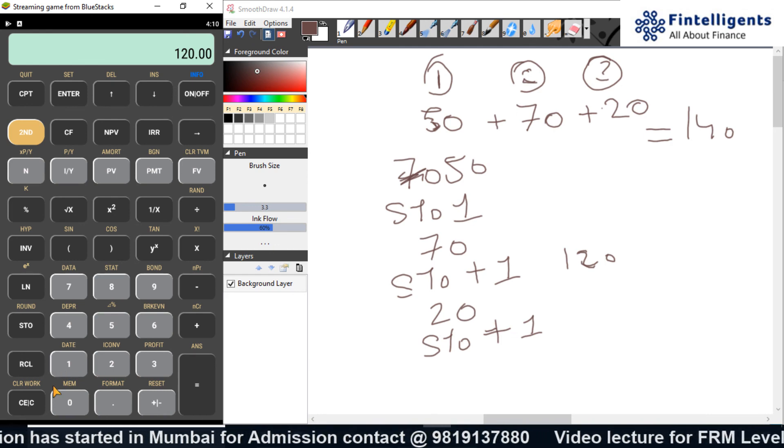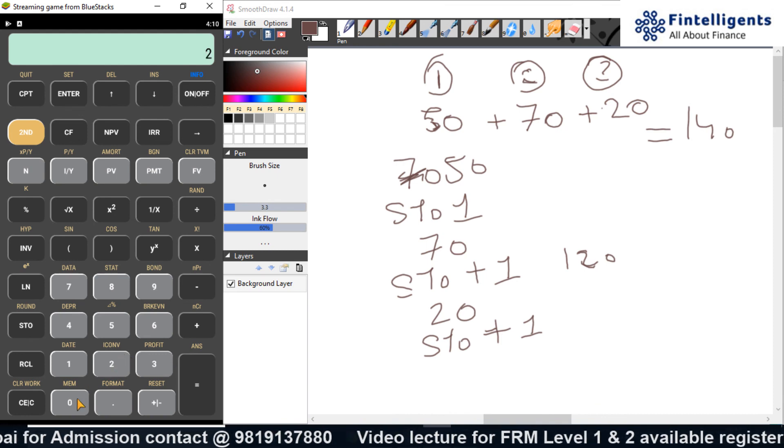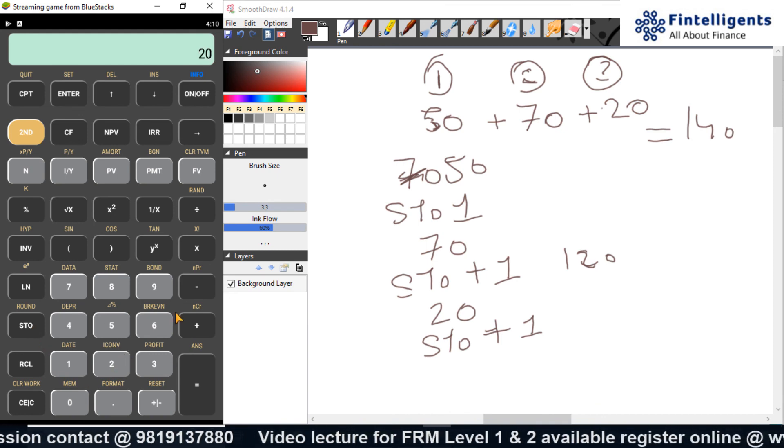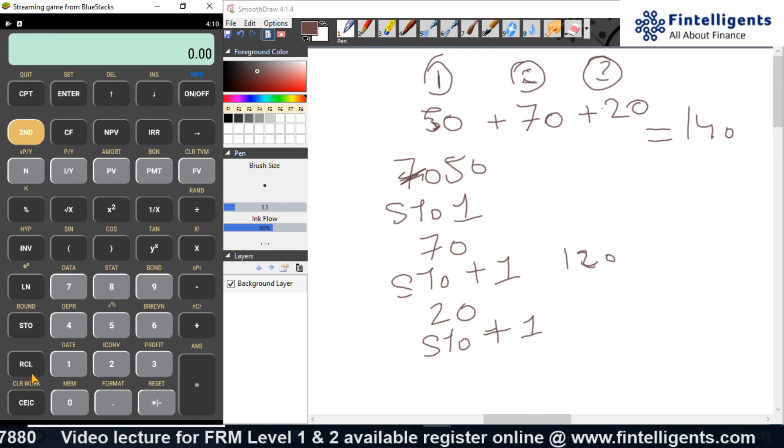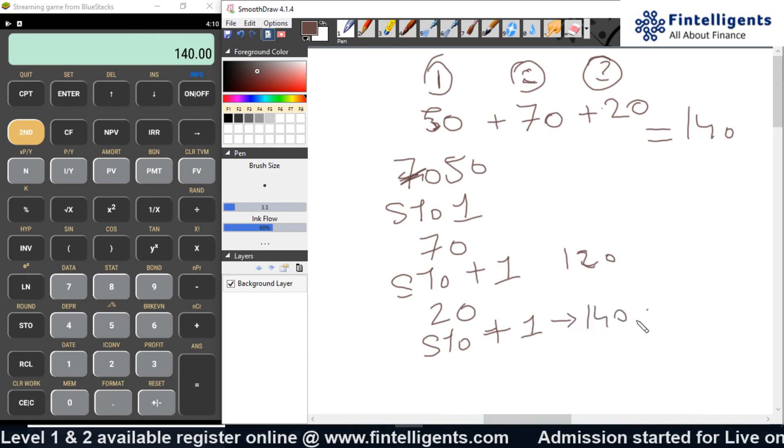Sorry. That is 20 is not stored. Incorrectly added 20. STO plus 1. Yeah. It is 140. This is an effective way to do that calculation.